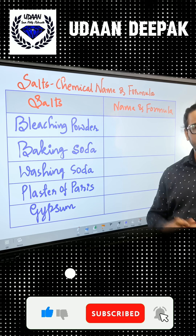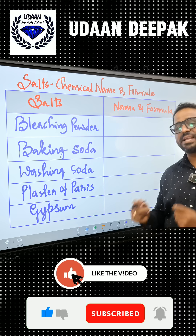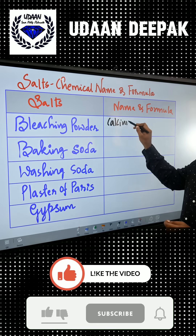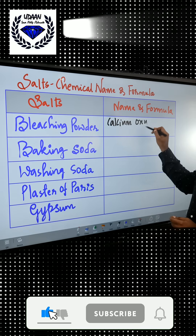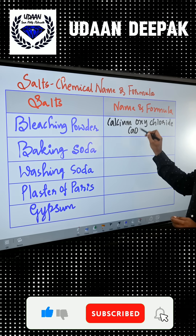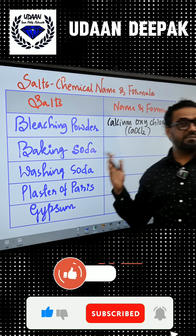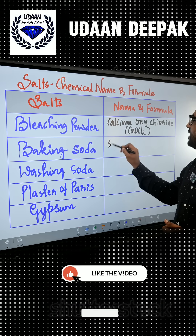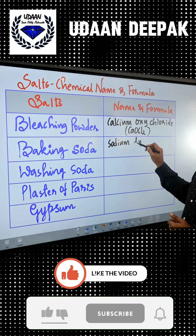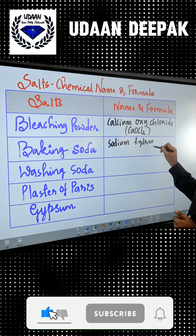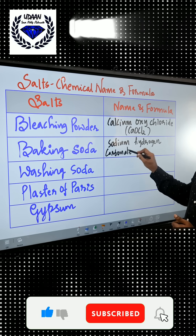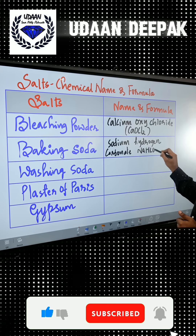So bleaching powder — let me know what is the formula and chemical name of bleaching powder. Bleaching powder is calcium oxychlorite, CaOCl2. Similarly, baking soda, that is sodium bicarbonate or sodium hydrogen carbonate, that is NaHCO3.